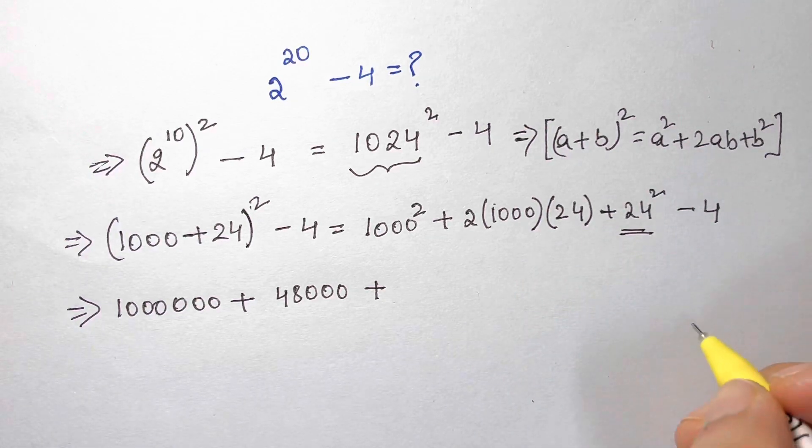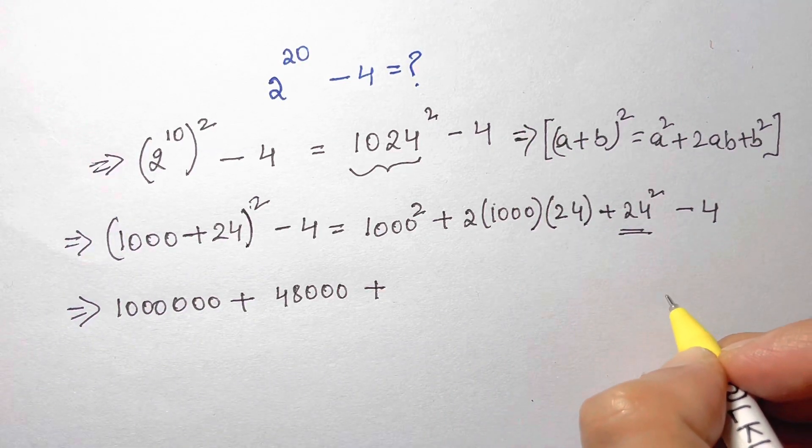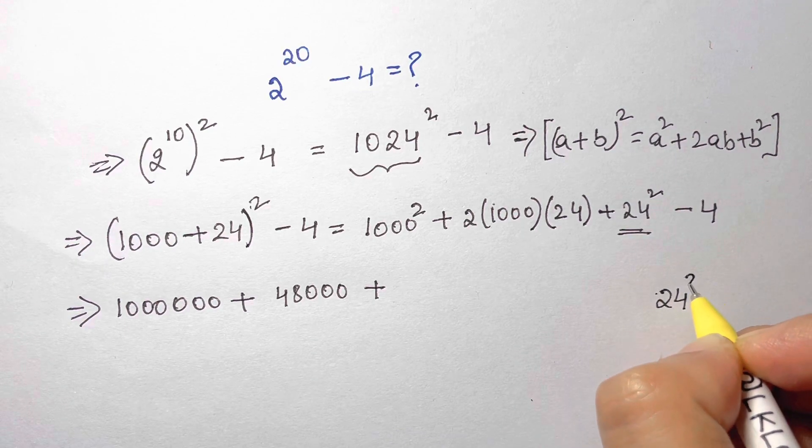So just follow this: whenever you have a squaring number like this, 24 squared, just take the square of the first digit 4.